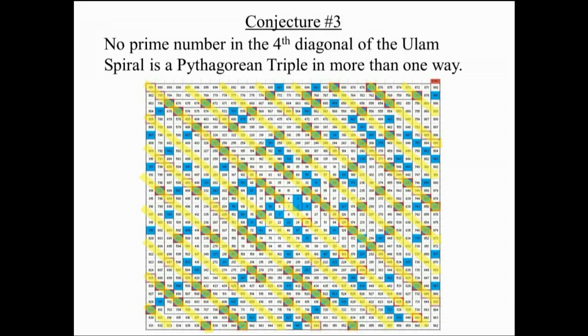Conjecture number three, I probably could have combined with conjecture number two to say that every prime in the fourth diagonal makes a unique Pythagorean triple. But I decided to separate it because it sounds more impressive to have five conjectures than four conjectures. Conjecture three is pretty simple: no prime in the fourth diagonal is a Pythagorean triple in more than one way. If you look at all the primes, they're only boxed once and no more than once.